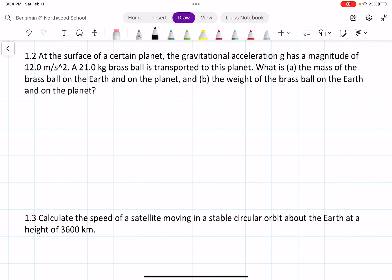So for part A, we know that the mass doesn't change. It doesn't matter what planet we're on, the mass will always be the same, so we just get 21 kilograms on both planets.